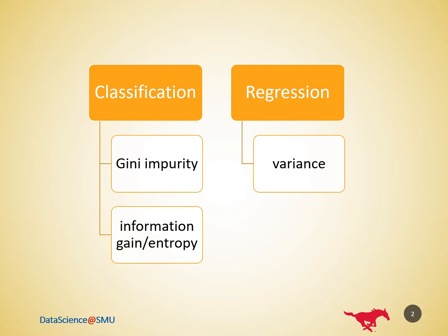For classification, the measure of impurity is either Gini impurity or the information gain entropy. For regression, the measure of impurity is variance.